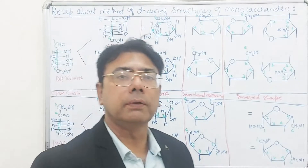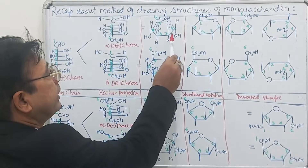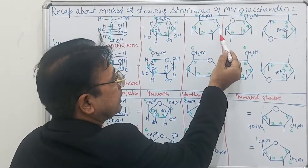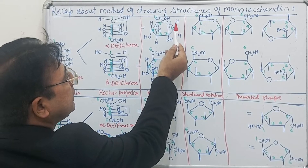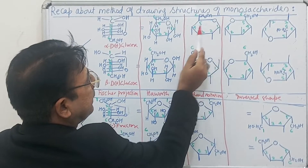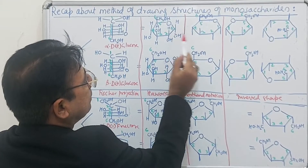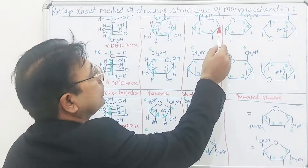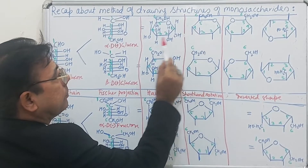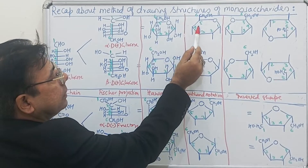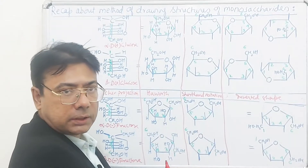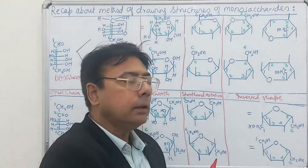There is a shorthand way of representing these structures. Instead of writing OH repeatedly, on the side where OH is present we draw a line, and on the side where H is present we don't draw a line. For example, where there is an H group we draw no line, and where there is an OH group we draw a line. Wherever there is an OH group we draw a small line — this is the shorthand notation.